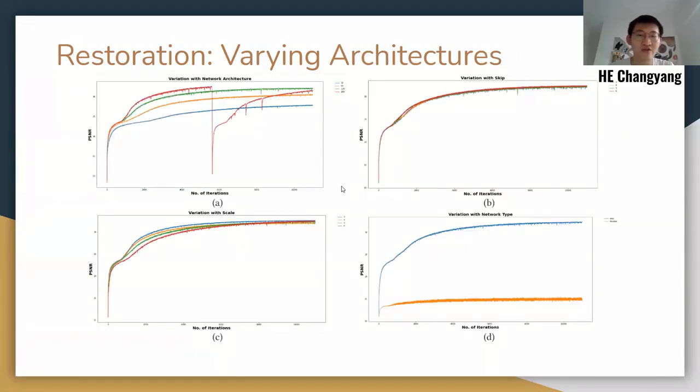We also vary architectures to test the performance for restoration. Larger models also generate better results, but they have the risk of instability. Unlike other tasks, skip and scale has little impact on the performance. Skip model, though with a simple structure, also has a much higher PSNR compared to ResNet.